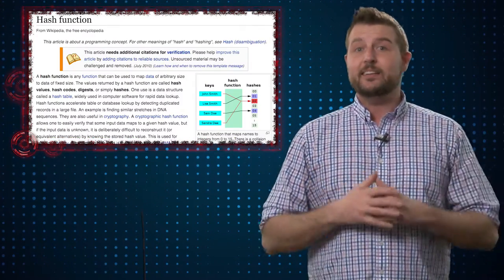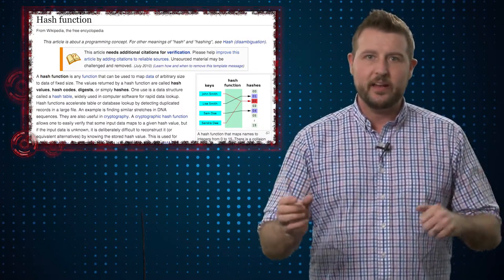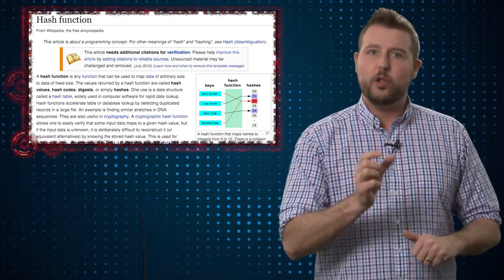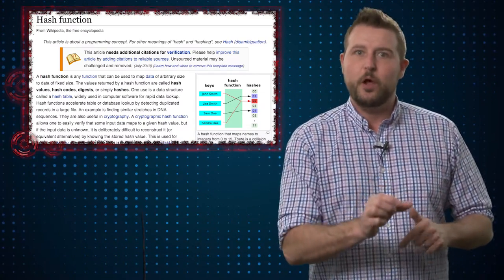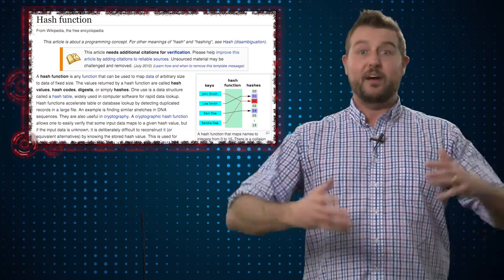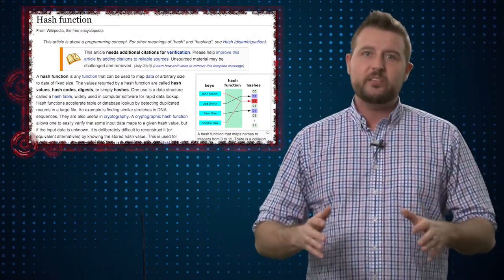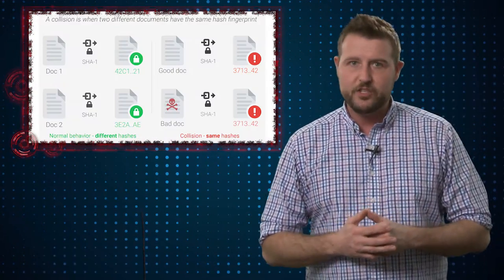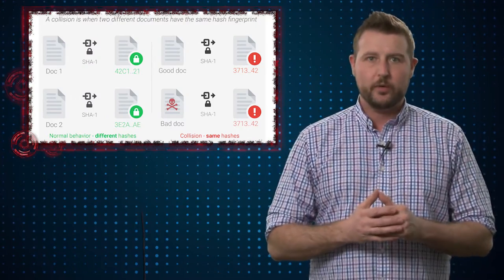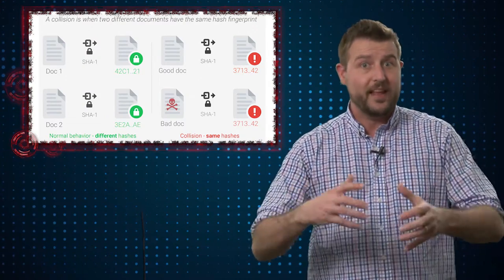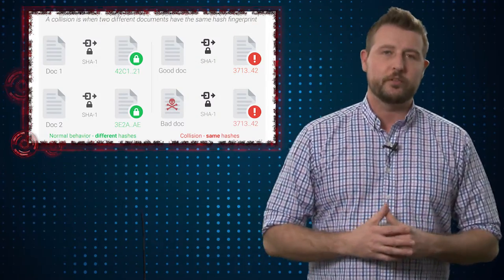That said, it's technically impossible to actually uniquely identify a large data set with a smaller thing. There's never going to be enough of those smaller things to uniquely identify every bigger set of data. So the truth is, it is possible to have collisions with hashes. But with more modern hashing algorithms, the chance of that collision gets smaller and smaller, and we're talking huge numbers.